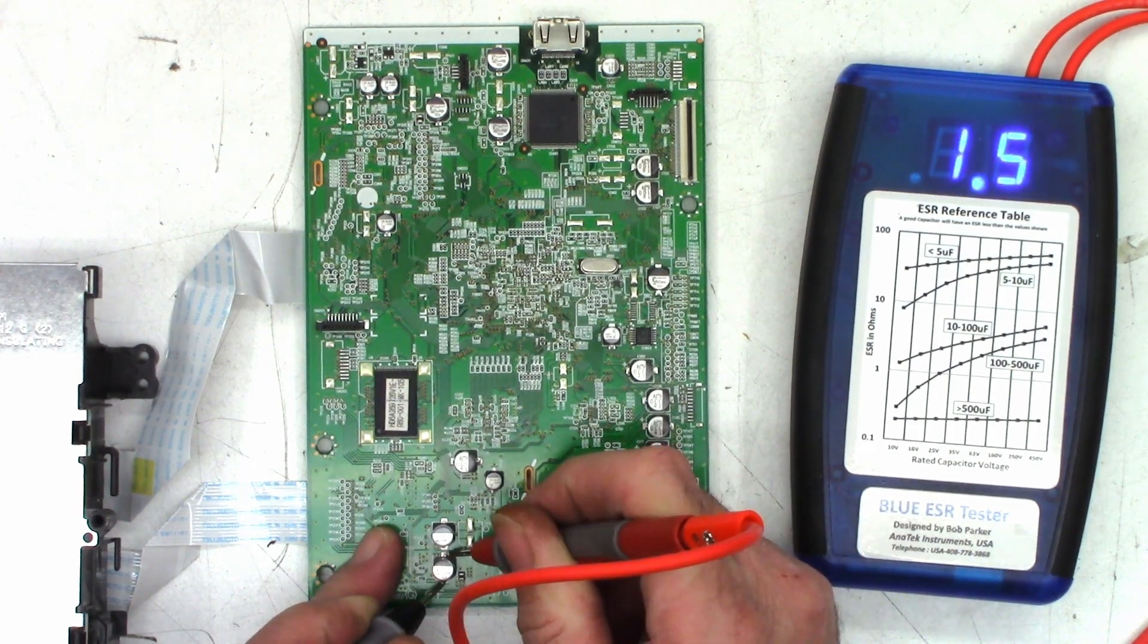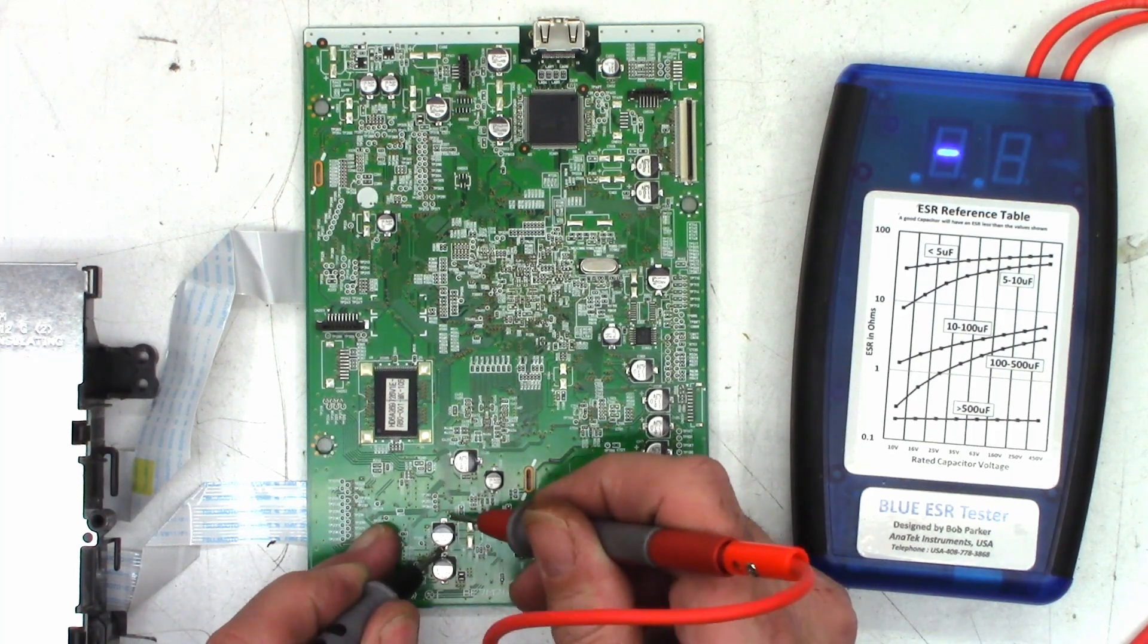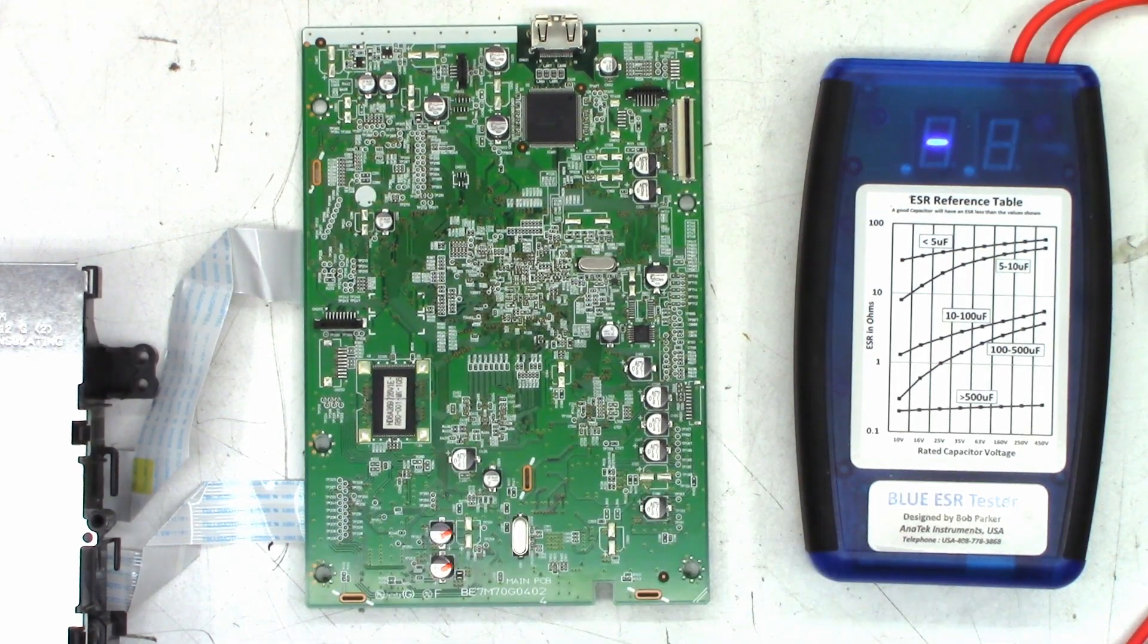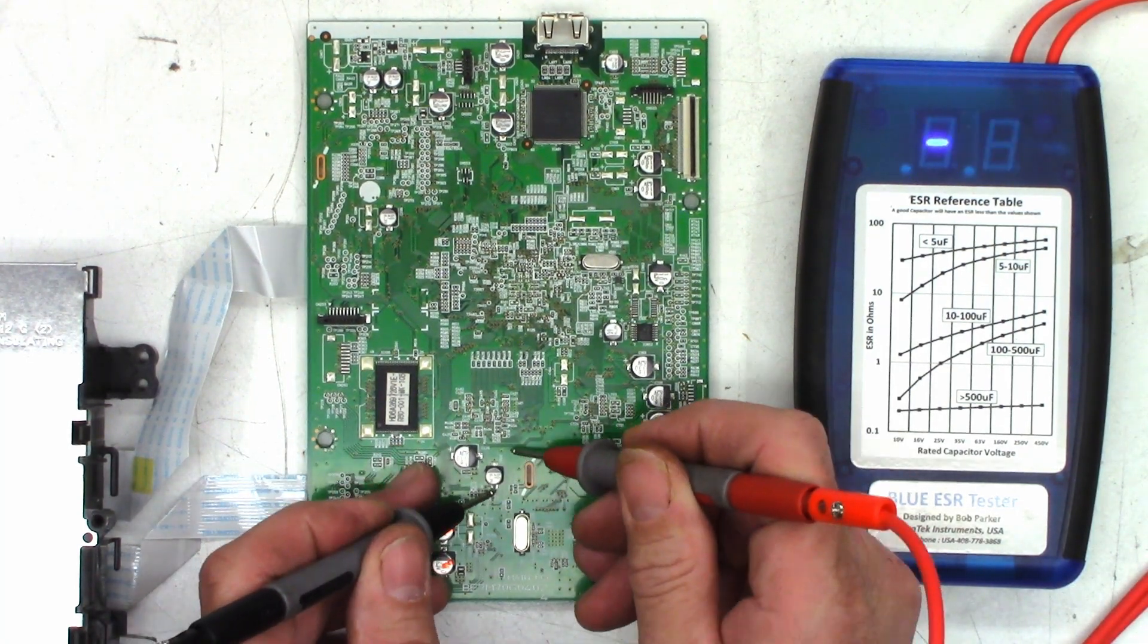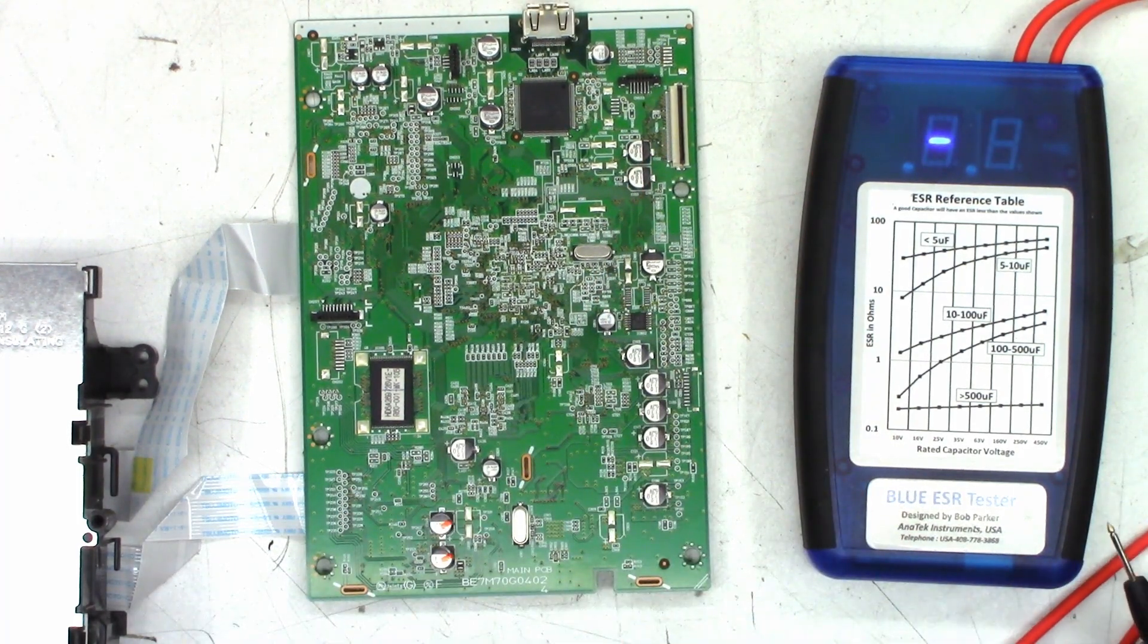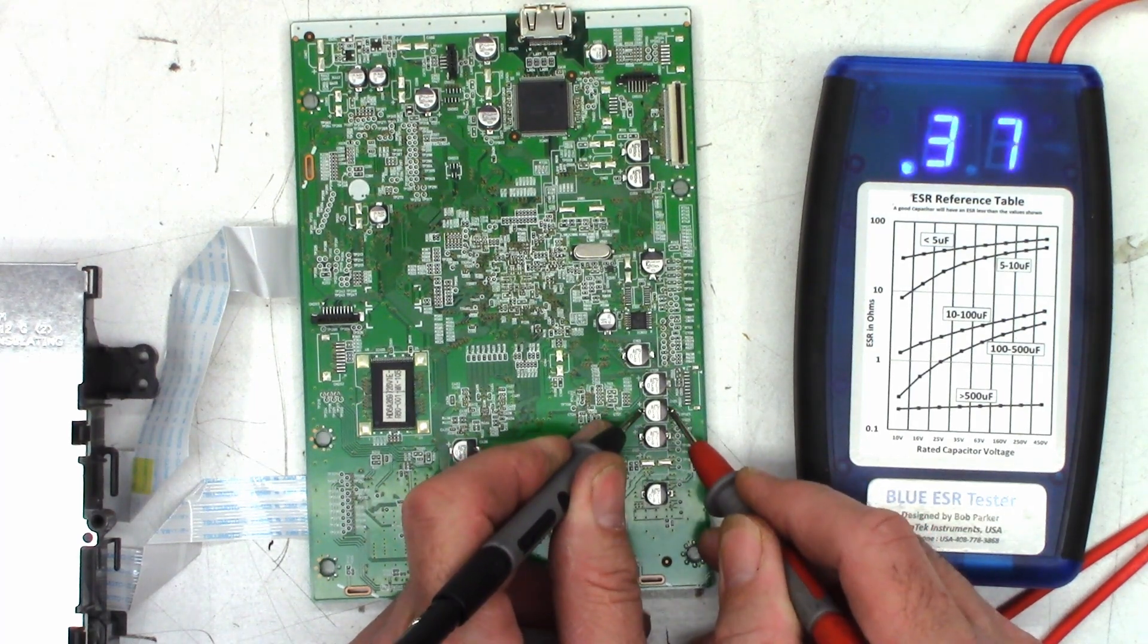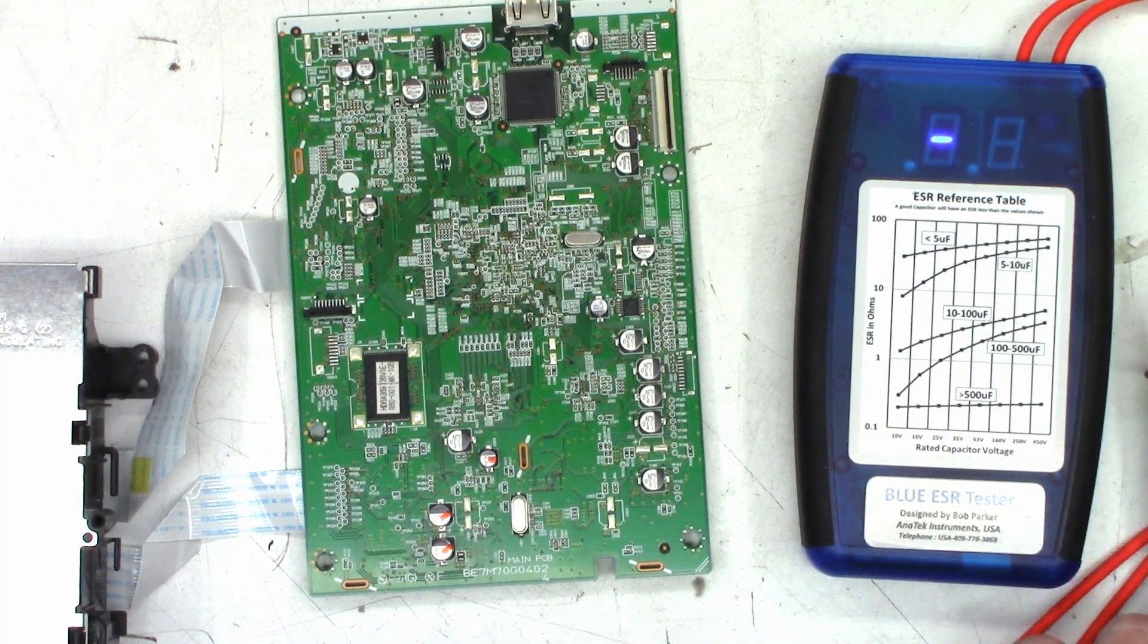330 microfarad cap, 1.5 ohms, just a hair high for my liking. I do have those for replacement just in case. I'd like to see an ohm or less. 47, 5.7 ohms, I'm going to call that one definitely bad. I'll mark the 330 at the same time so I can replace that. 0.42 ohms, I'm totally happy with that on a 330. 3.4 ohms on a 47, I'm going to say that one's bad as well. I'd like to see probably 2 ohms or less on that. 1.1, definitely bad.